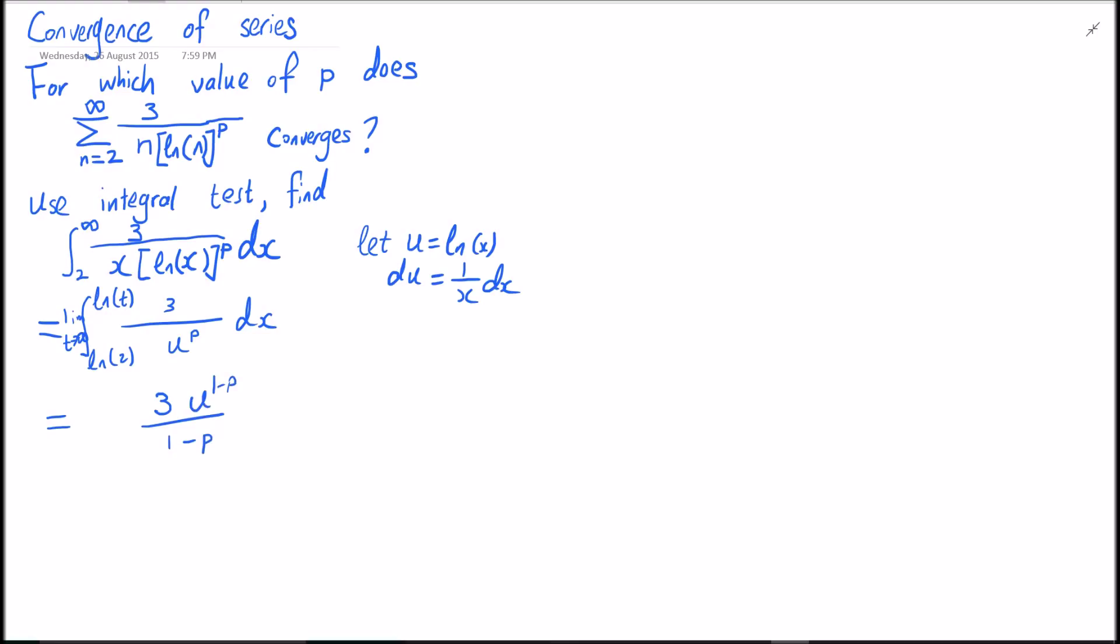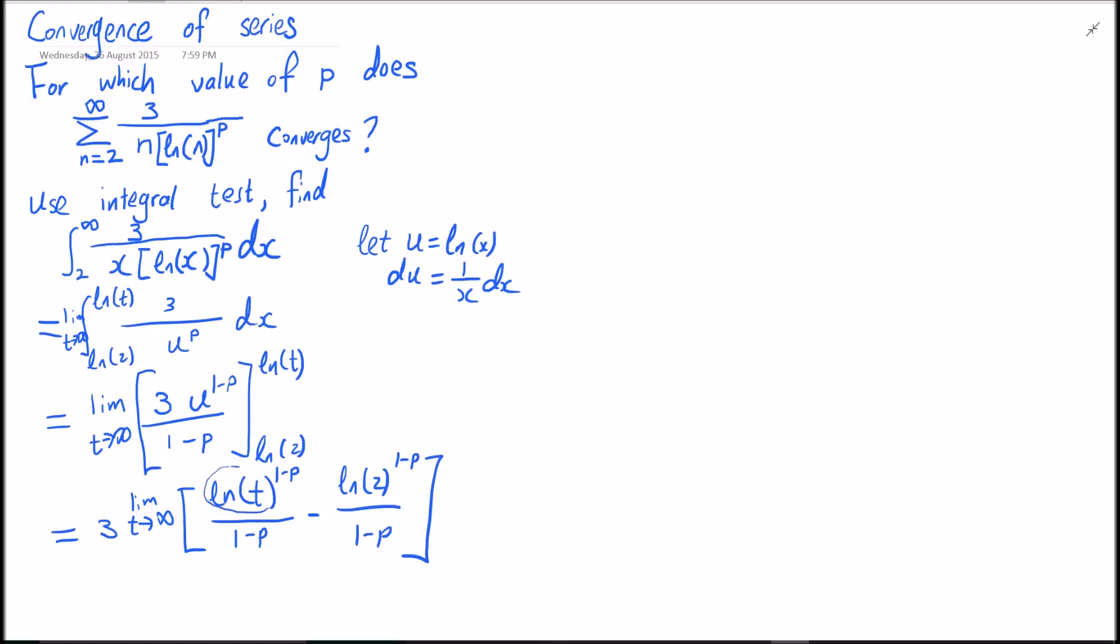The resulting integral is 3 times u to the power 1 minus p over 1 minus p, with the integral limits. We let t go to infinity and we get log of t to the power 1 minus p over 1 minus p minus log of 2 to the 1 minus p.